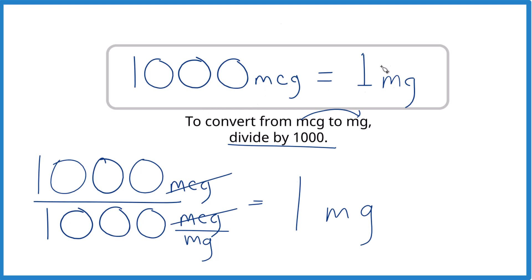So 1,000 micrograms, that's one milligram. And that's the conversion factor. It's really just something you memorize. And then, any number of micrograms you're given, you can convert to milligrams and the reverse.